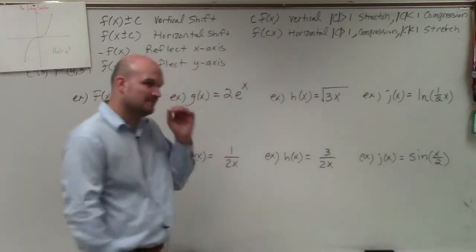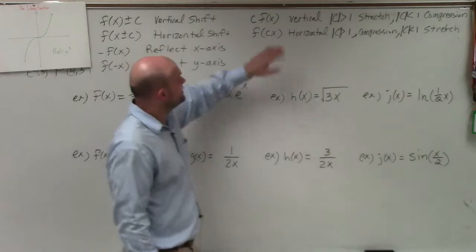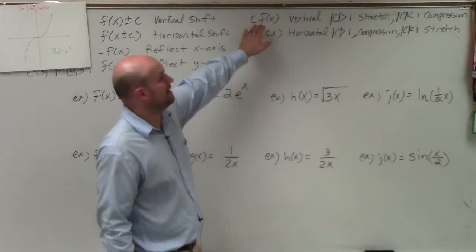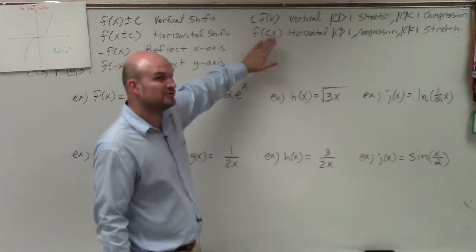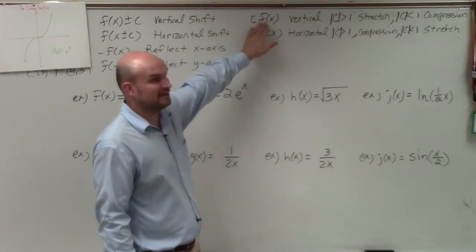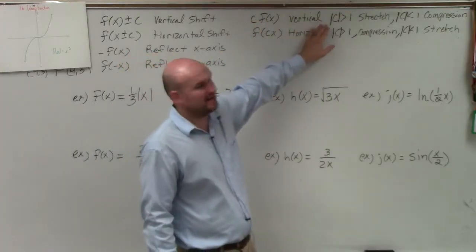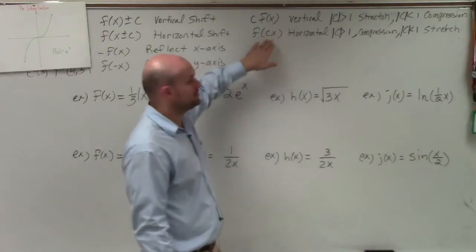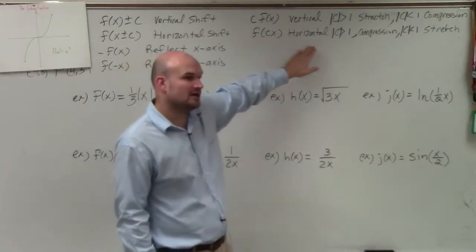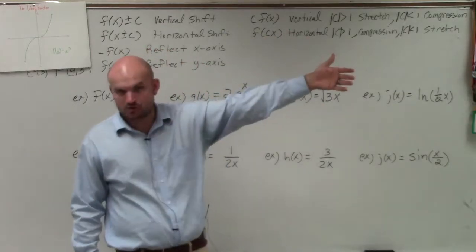So we've got to be careful. Again, the main important thing we want to look at is it multiplying by a value outside, or is it multiplying by a value inside? For multiplying by a value outside, we call that basically a vertical stretch or compression. If it's multiplying by a value inside, we call it a horizontal stretch or compression.